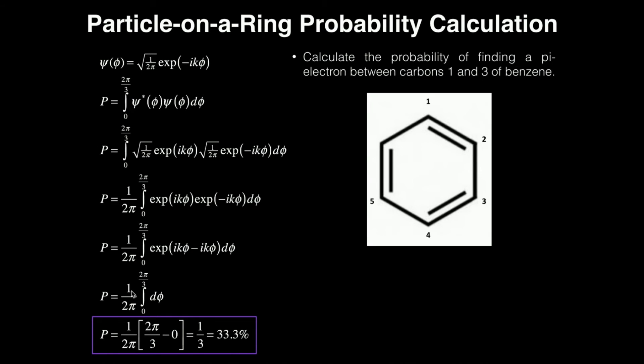So the probability is one over two pi times phi evaluated from zero to two pi over three, and using fundamental theorem of calculus, that becomes two pi over three minus zero.